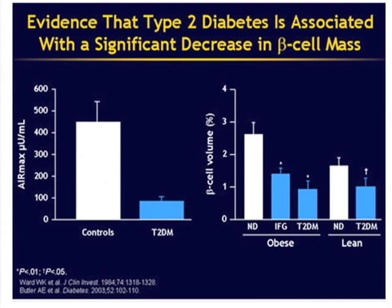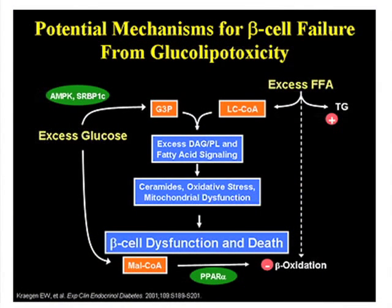How do beta cells fail? We know there is genetic potential, but glucolipotoxicity — the mechanism where beta cells are exposed to both glucose and free fatty acids simultaneously — leads to accumulation of free fatty acids within the beta cells, accumulation of ceramides, and mitochondrial dysfunction within the beta cell, predisposing to premature beta cell destruction and death.